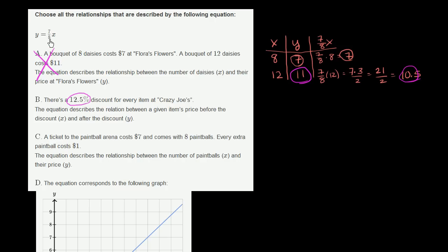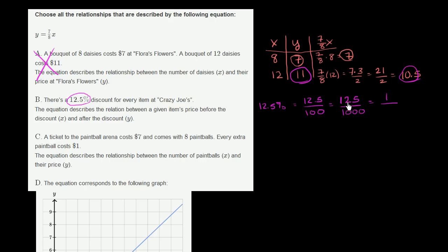Let's construct an equation and see if it matches. 12.5% is the same thing as 12.5 over 100. If we multiply numerator and denominator by 10, that's 125 over 1,000. Both are divisible by 125: dividing numerator by 125 gives 1, dividing denominator by 125 gives 8, since 8 times 125 is 1,000. So 12.5% is the same as 1 eighth.